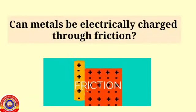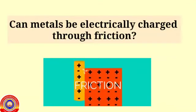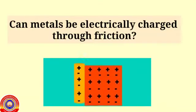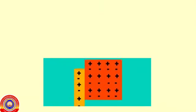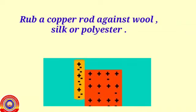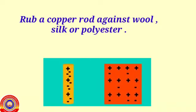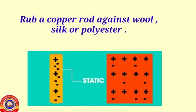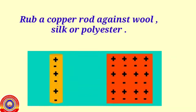Can metals be electrically charged through friction? Let's see. Rub a copper rod against wool, silk, or polyester and find whether it attracts other objects. What do you observe? It doesn't attract. If you repeat the process with a hacksaw blade, steel spoon, or any metal, the same will happen.